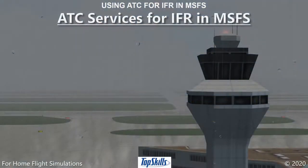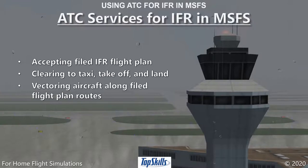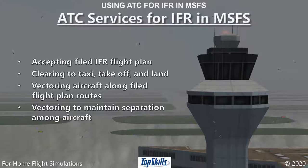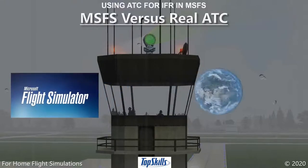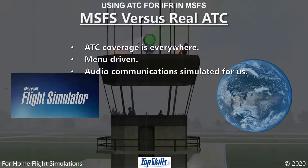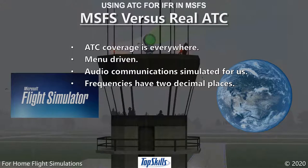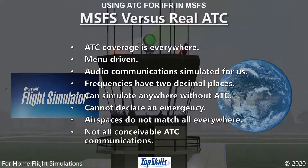Air traffic control services available in Microsoft Flight Simulator include accepting IFR flight plans, clearing aircraft to taxi, takeoff, and land to avoid other aircraft, vectoring aircraft along a filed flight plan route, and vectoring aircraft around other aircraft to maintain separation. ATC also provides weather reports through several automated methods. Differences from the real world include ATC being available everywhere, menu-driven communications, simulated audio, frequencies with two decimal places, no emergency declarations, and some real-world communications not supported.